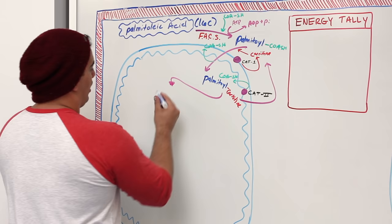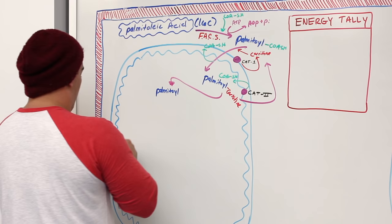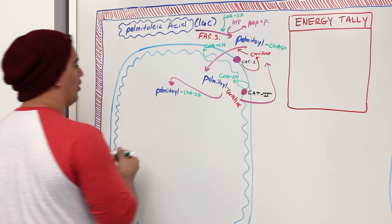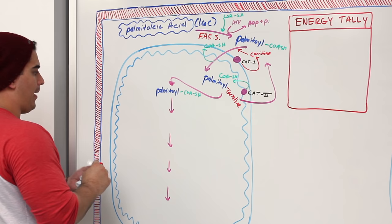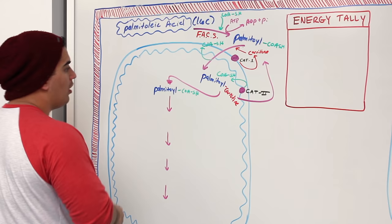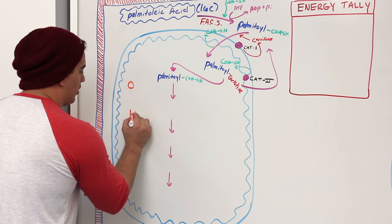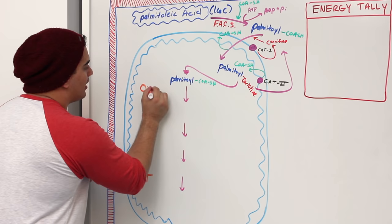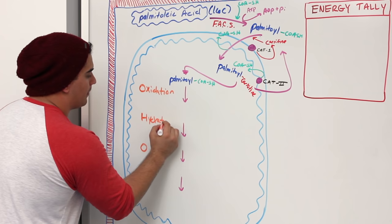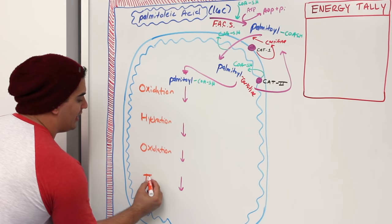Then we go through four steps of beta-oxidation. A helpful mnemonic is O-HOT: O stands for oxidation, H for hydration, O for another oxidation step, and T for thiolase. In the first oxidation step, FAD is reduced to FADH2. Remember: there's an F in FAD and an F in first, so FAD goes first. This produces the trans-delta-2-enoyl-CoA.